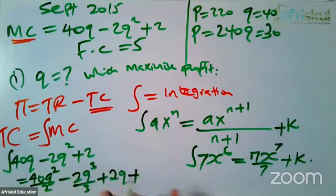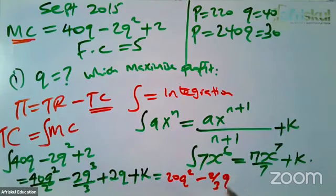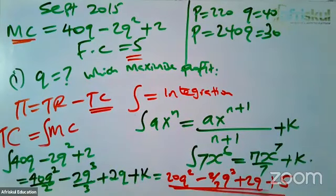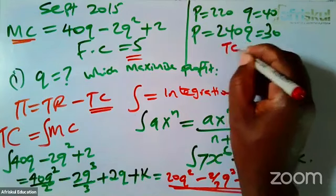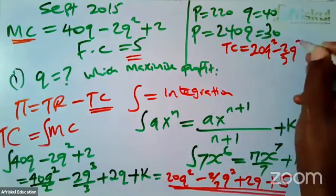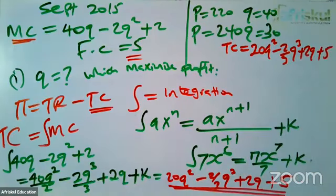Plus, after I've finished integrating all these terms, I'll not forget my k. So if that is the case, then at the end of the day, I will have this 40 over 2, that is 20q squared, minus 2 over 3q raised to power 3, plus 2q, plus my k. K in terms of cost will be fixed cost. And the fixed cost has been given by the examiner here as 5. This is a very important formula for me. The total cost is 20q squared minus 2 over 3 q raised to power 3 plus 2q plus 5. That is total cost.